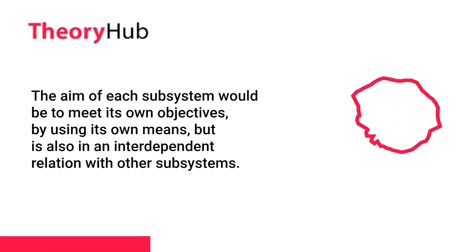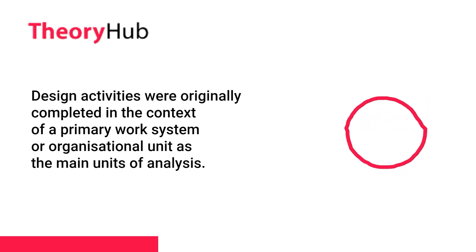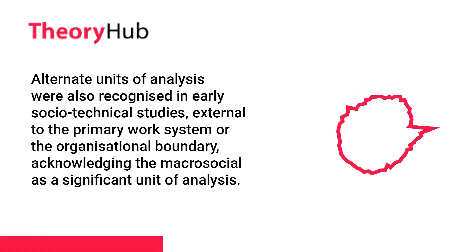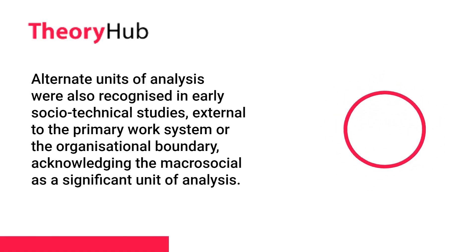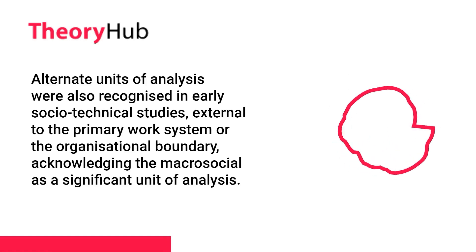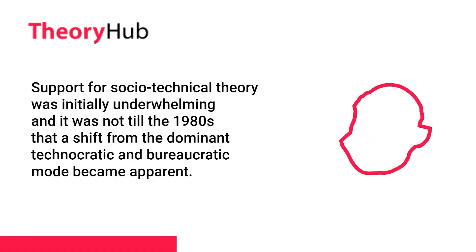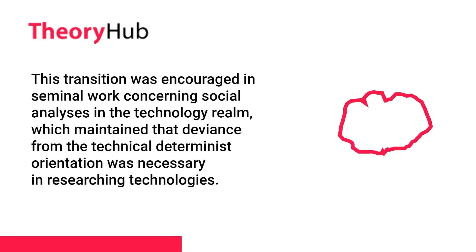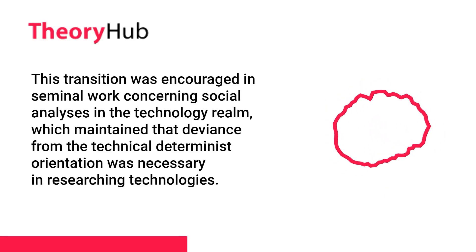The aim of each subsystem is to meet its own objectives using its own means, but is also in an interdependent relation with other subsystems. Design activities were originally completed in the context of a primary work system or organizational unit as the main units of analysis. Alternate units of analysis were also recognized in early socio-technical studies, acknowledging the macro-social as a significant unit of analysis. Support for socio-technical theory was initially underwhelming, and it was not until the 1980s that a shift from the dominant technocratic and bureaucratic mode became apparent, encouraged by seminal work maintaining that deviation from the technical determinist orientation was necessary in researching technologies.